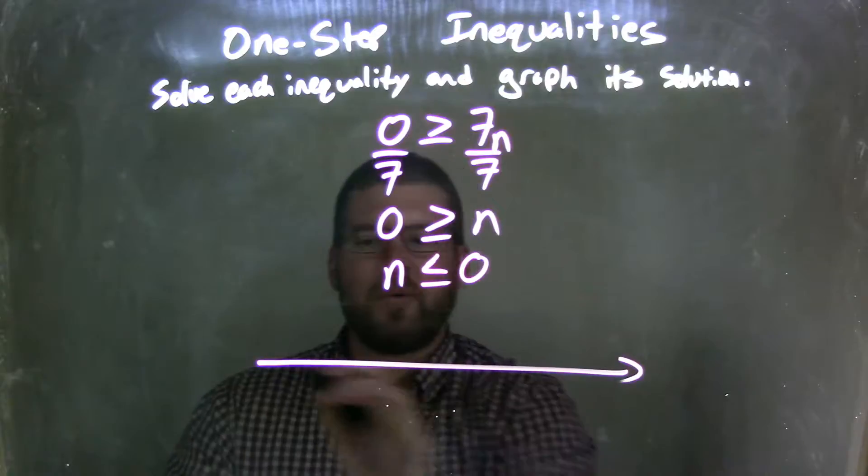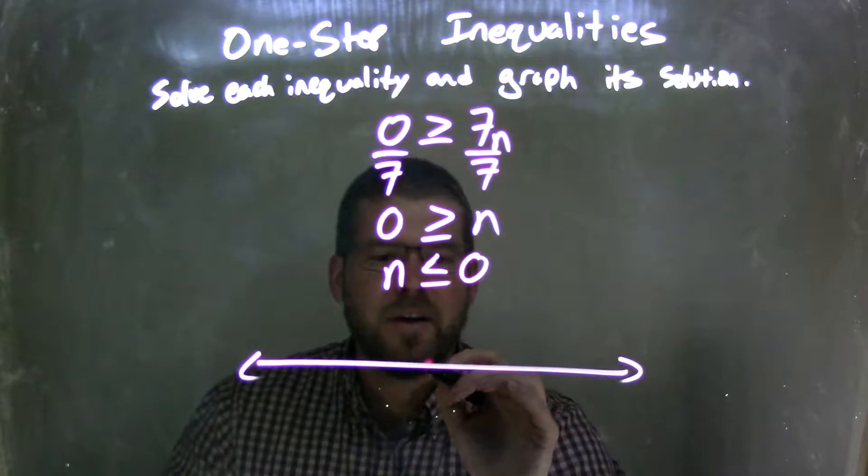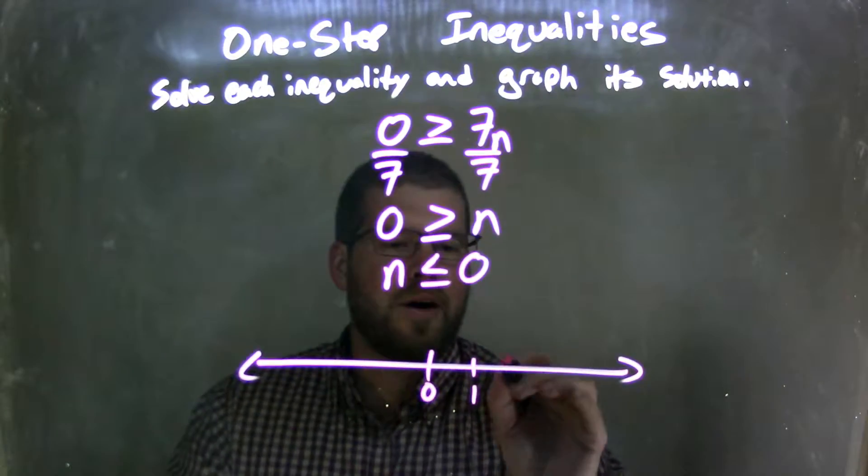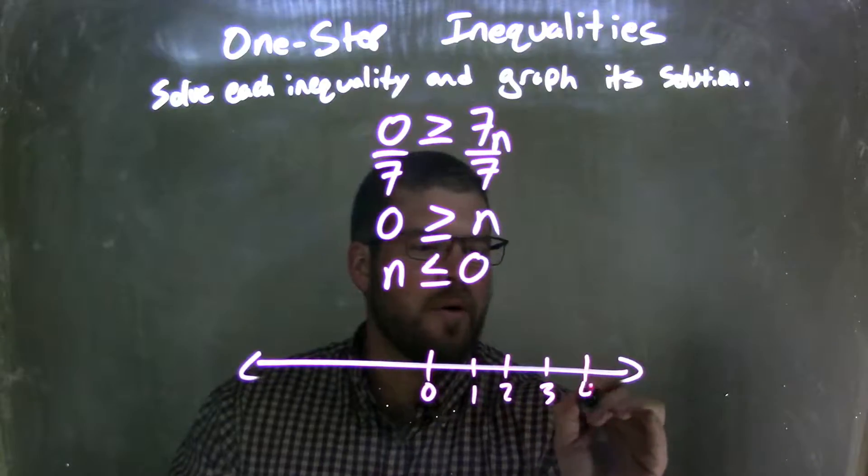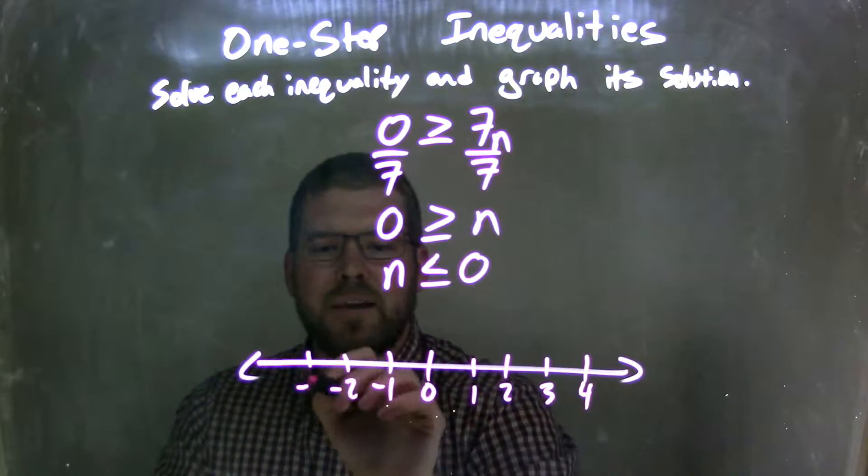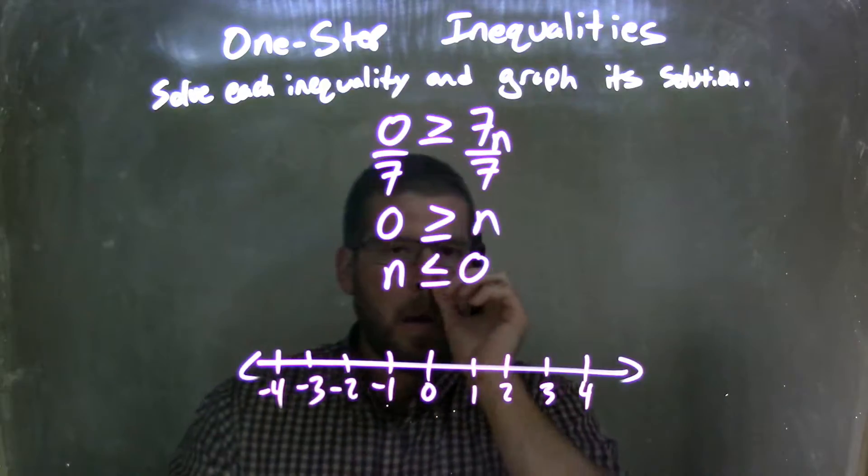And so if I want to make this into a graph now, I'm going to graph it, put 0 right in the middle, 1, 2, 3, 4, negative 1, negative 2, negative 3, and negative 4.